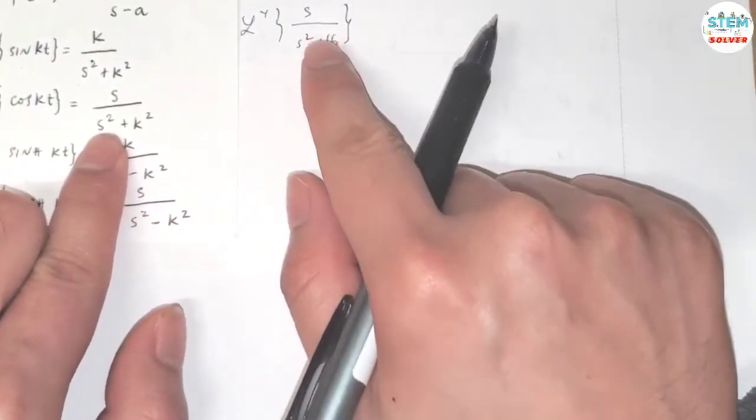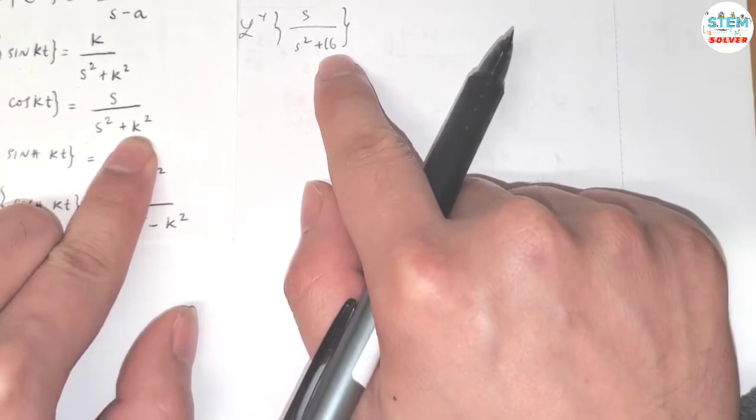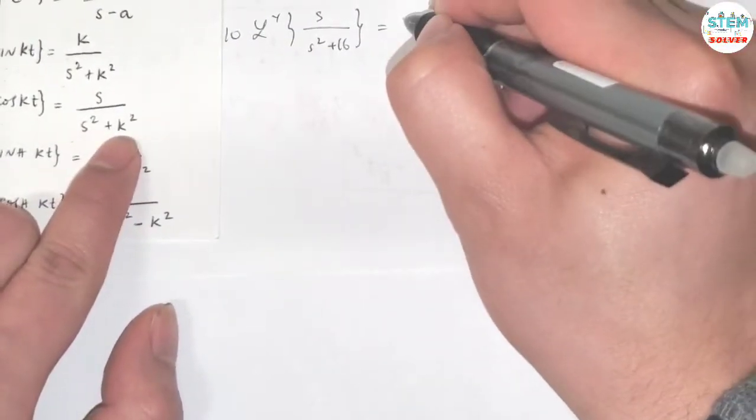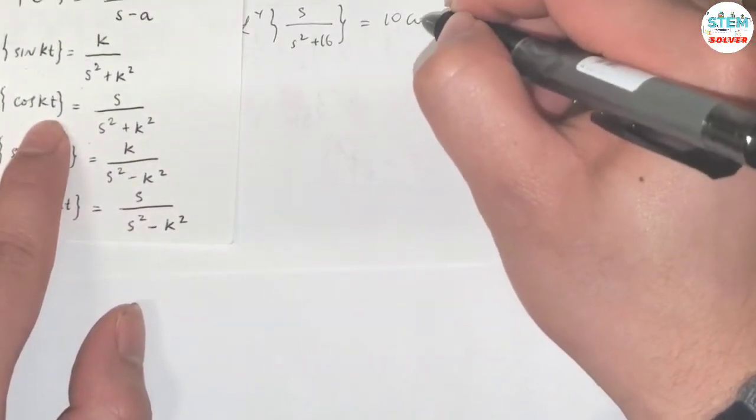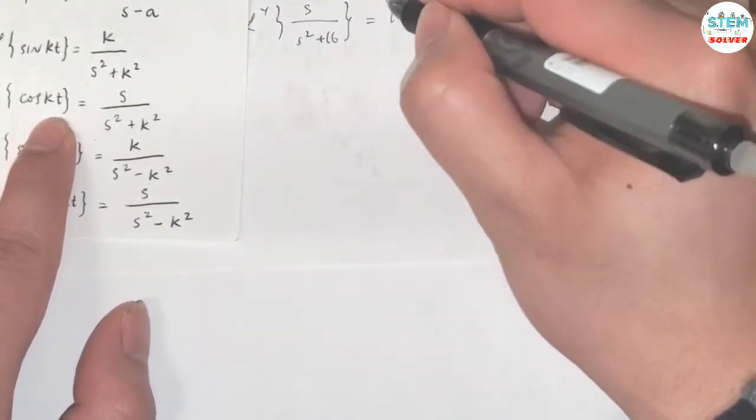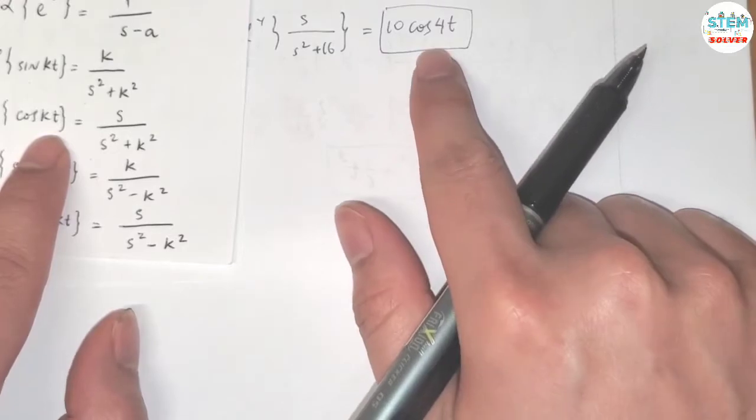So we have s over s-squared plus k-squared and 16 can be written as 4-squared. So the inverse of this is going to be cosine kt, which is cosine of 4t. So this is your final answer.